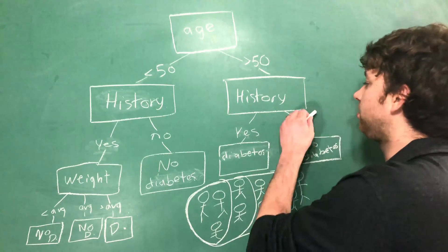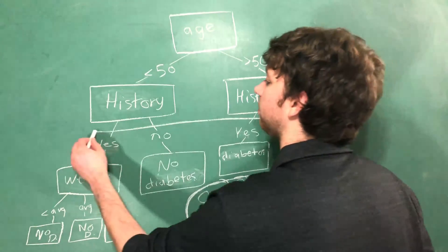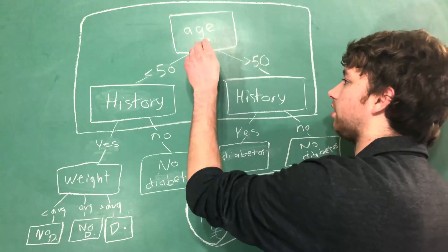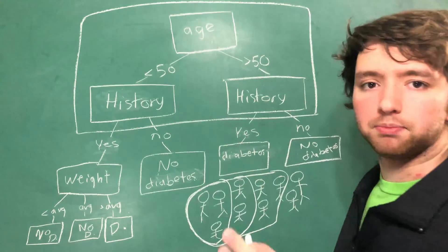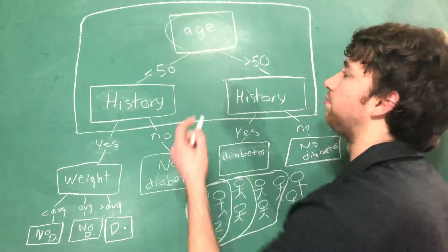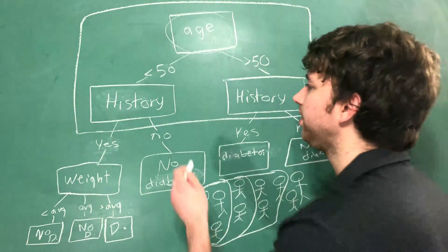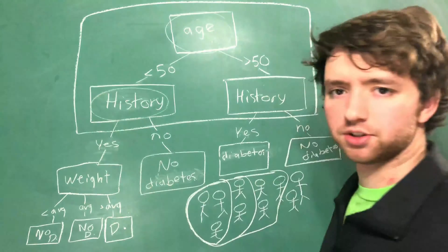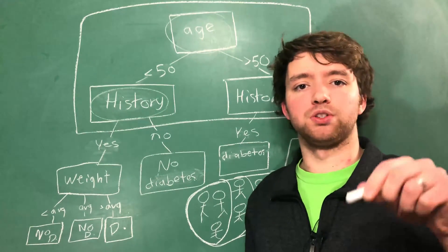For this video I want you to pay special attention to this area right here. Okay, so we're looking at the root node and the next step. How do we decide to split our data by age? And then how do we decide to split our data by history? That is what this video is going to be about.